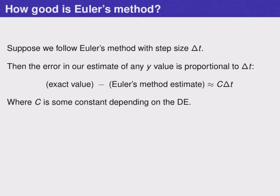So how good is Euler's method? Well, suppose that we follow Euler's method with a step size of delta T. Then the error in our estimate of any Y value is proportional to the step size delta T. In words, that means that the exact value of the solution, if we knew how to calculate it, minus the estimate given by Euler's method is approximately equal to C times delta T, where C is a constant that depends on the differential equation.